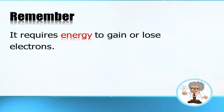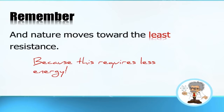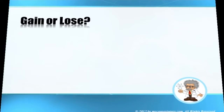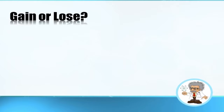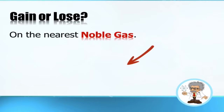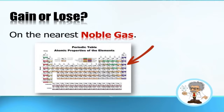The octet rule states that elements gain or lose electrons in order to obtain a noble gas valence. Remember it requires energy to gain or lose electrons, and nature moves towards least resistance — the easiest route. Whether an element gains or loses depends on the nearest noble gas configuration it can achieve.